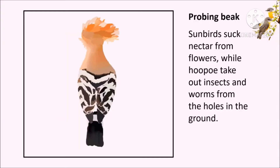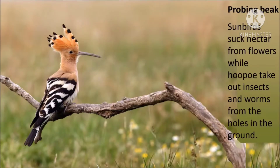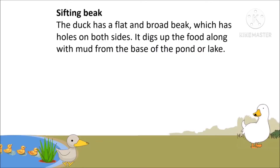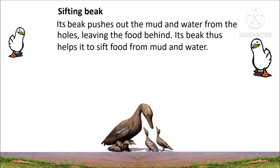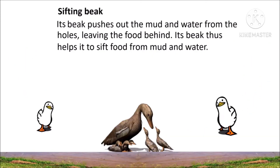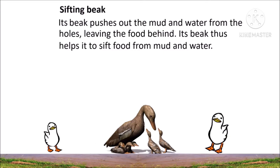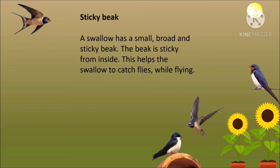Some birds like hummingbird, sunbird and hoopoe have a long and slender probing beak. Sunbirds use it to suck nectar from flowers, while hoopoe use it to take out insects and worms from holes in the ground. The duck has a flat and broad sifting beak with holes on both sides. It digs up food along with mud from the base of a pond or lake, and its beak pushes out the mud and water through the holes, leaving the food behind.